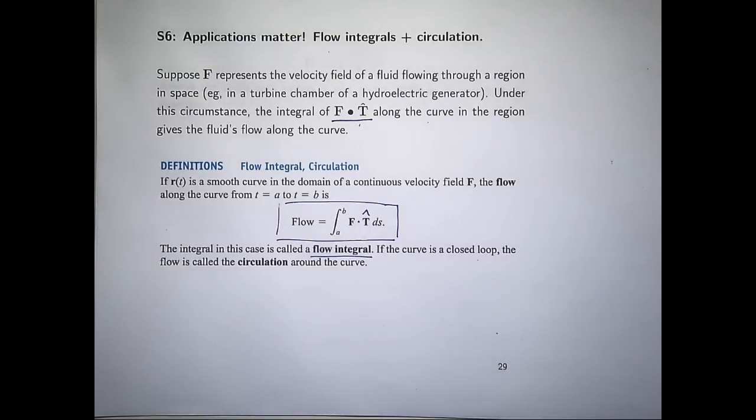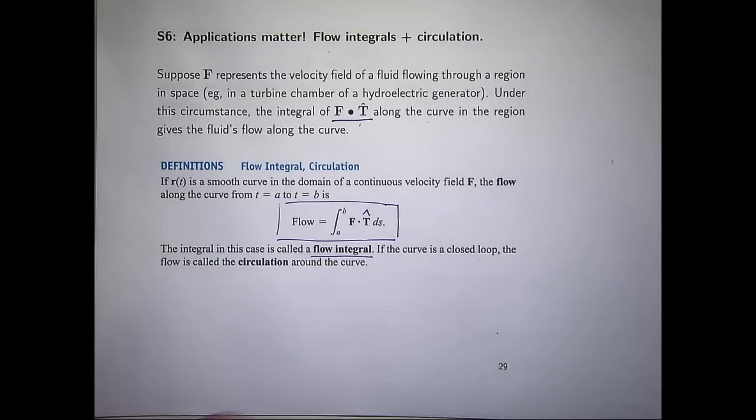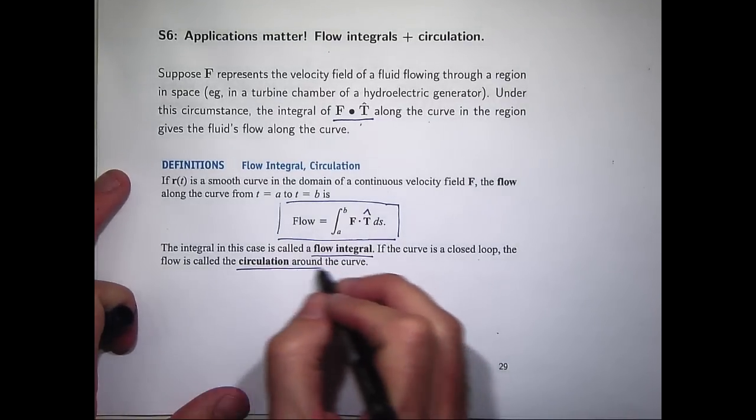We may refer to that as the flow integral of F along the curve C. Now if the curve is a closed loop like a circle or an ellipse, then this integral is called the circulation of F around the curve.